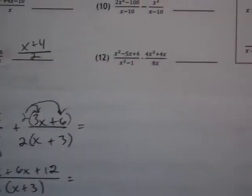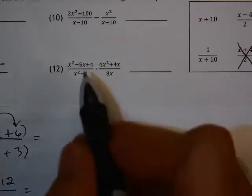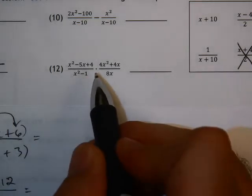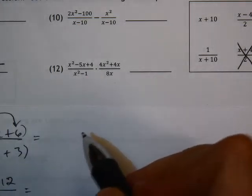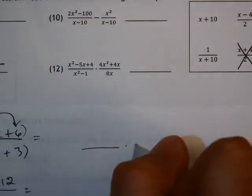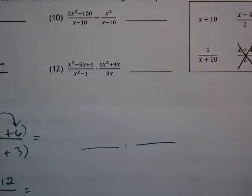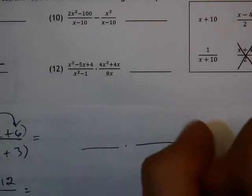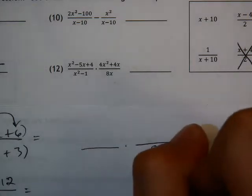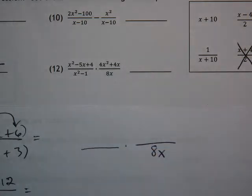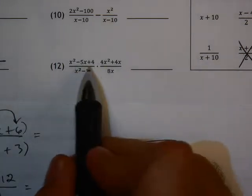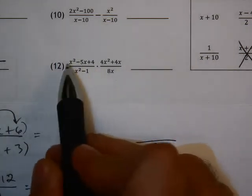Now number 12. Same idea, but now we don't need common denominator because we are multiplying. So the first thing I'm going to do is, when I rewrite this, I'm going to factor as much as I can. One part that will not factor is the 8x on that denominator on the right side. But I should be able to factor all the rest of this.